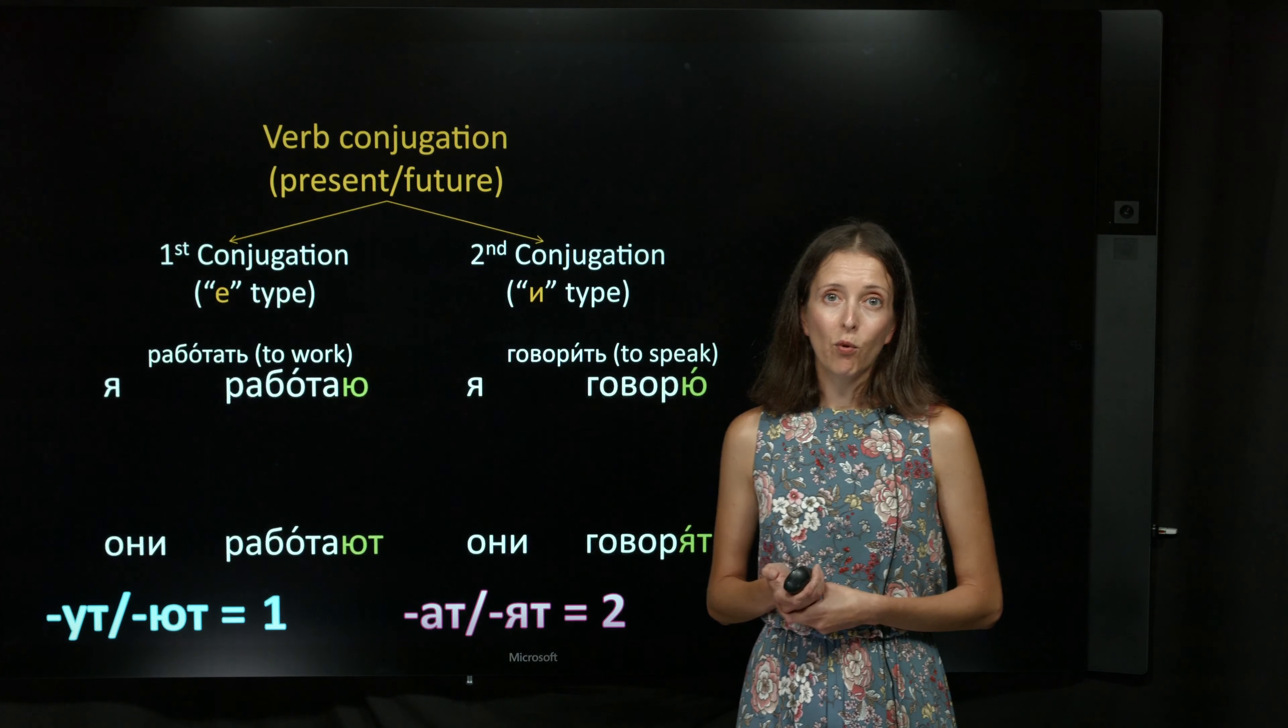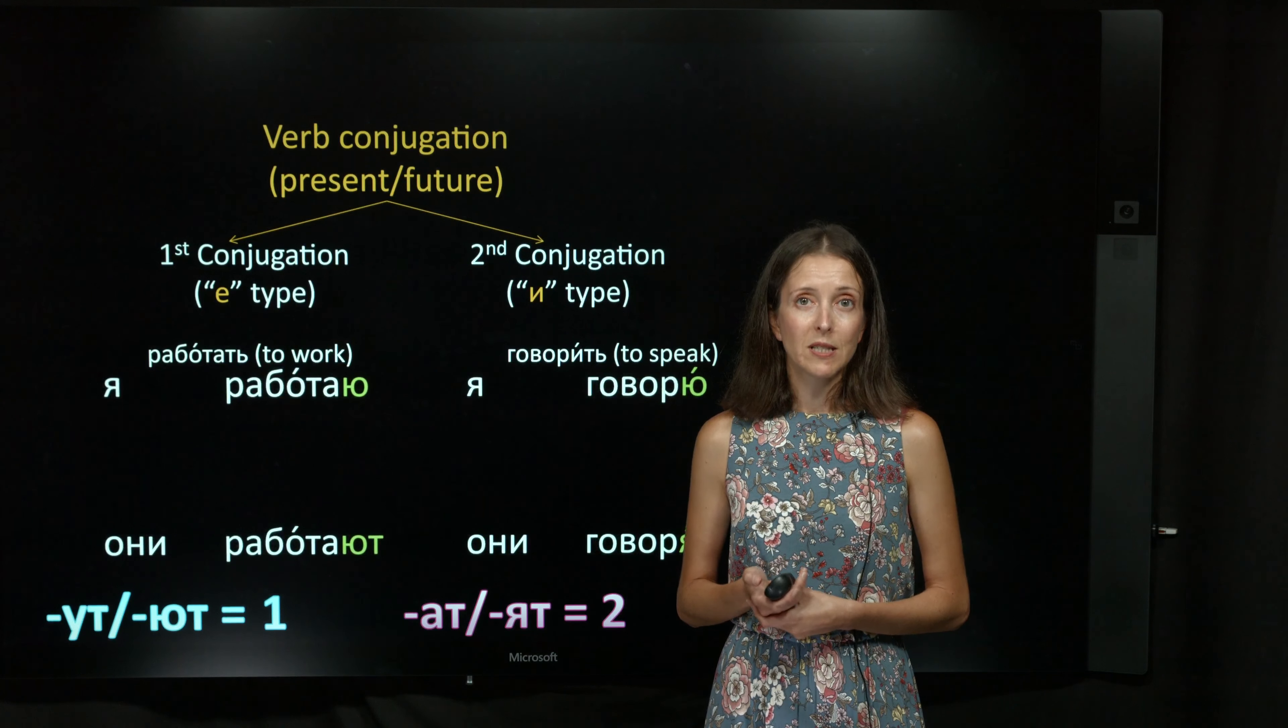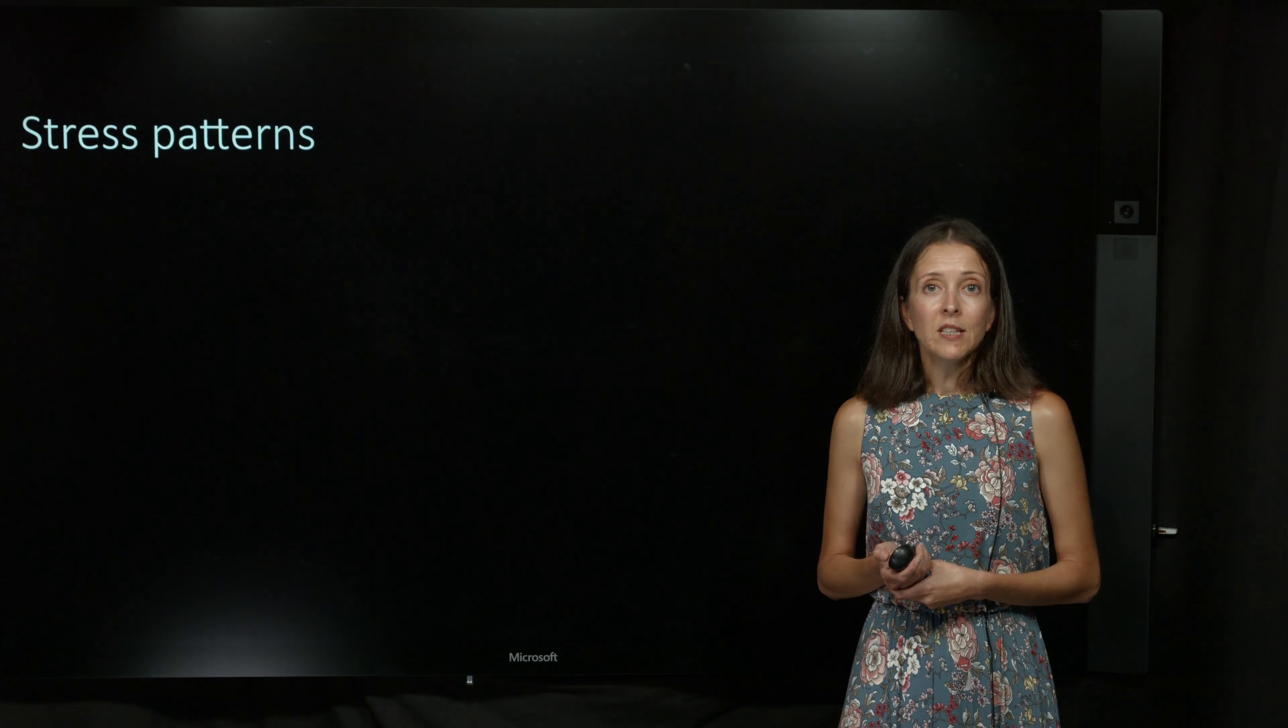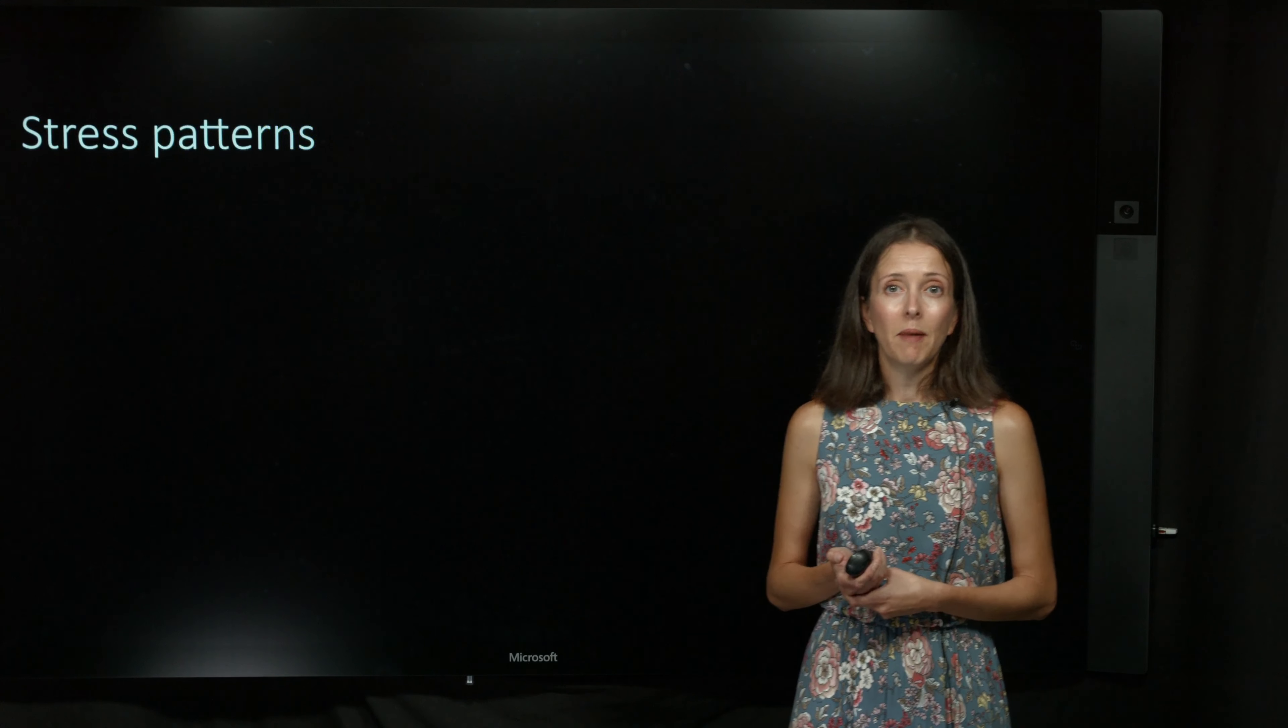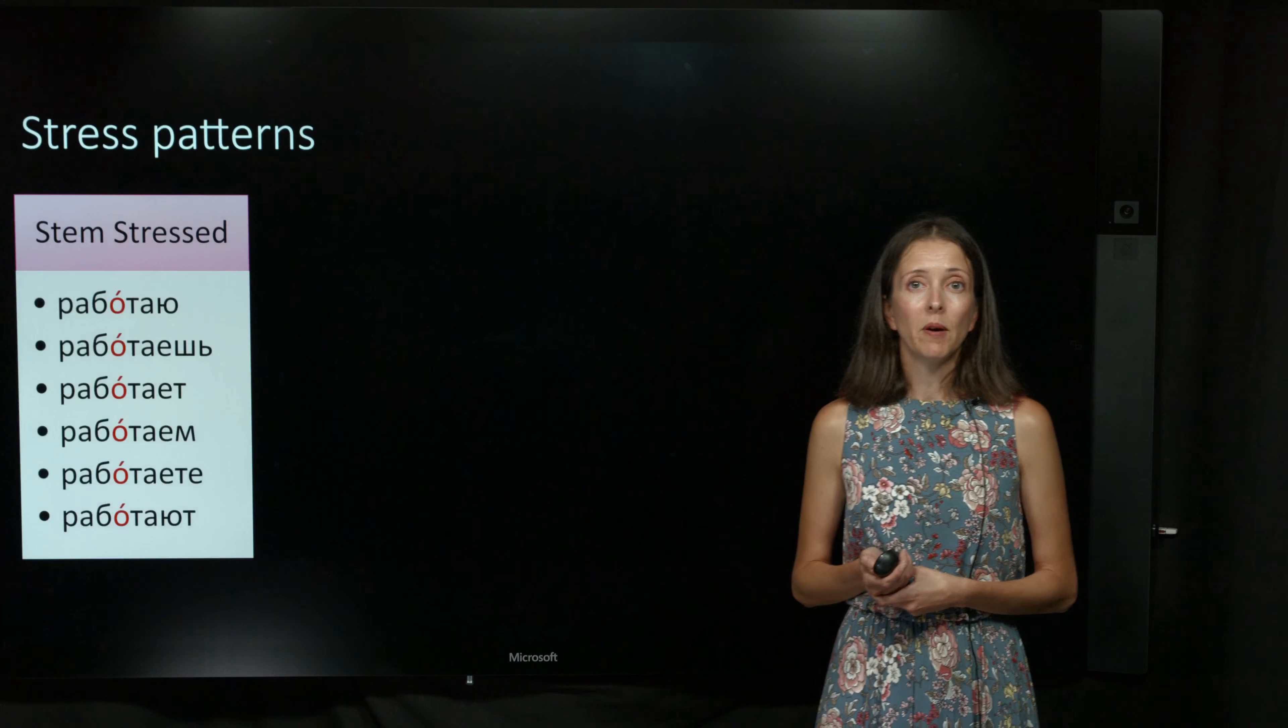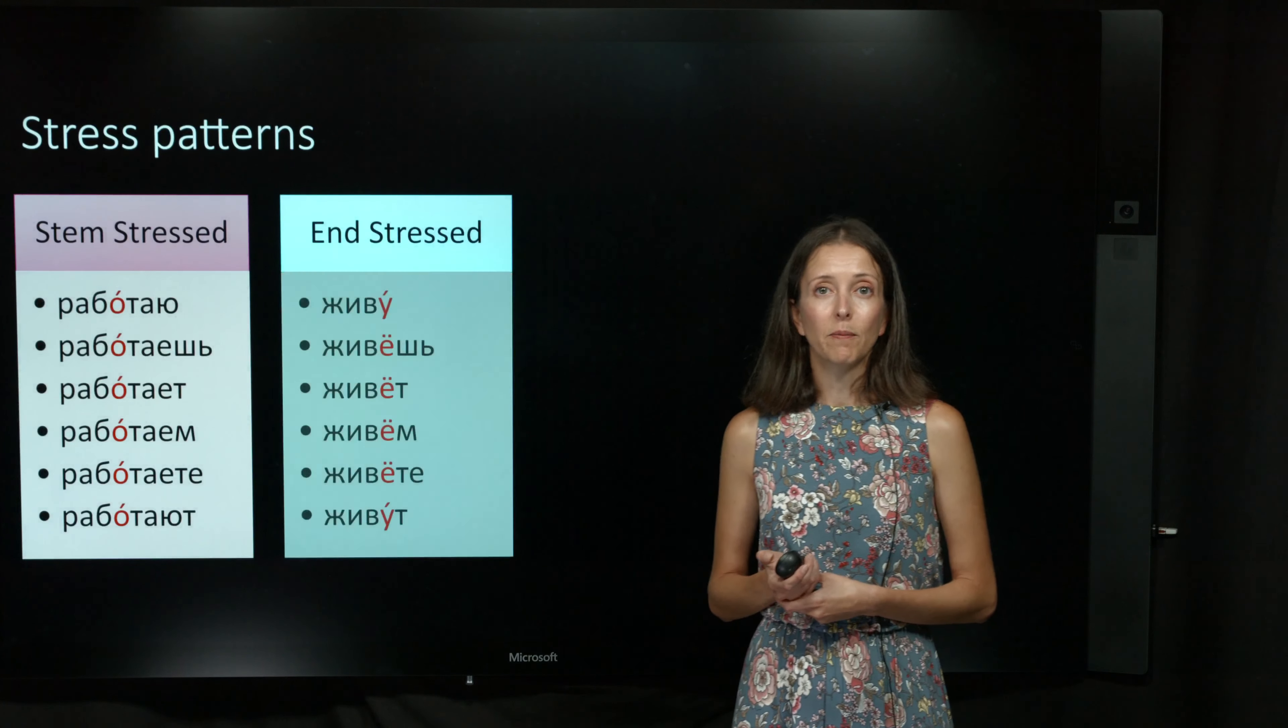Finally, the Я and Они forms combined will give you important information about the stress pattern of the verb. There are three stress patterns in the present-future forms. Verbs can be stem-stressed, like the verb работать. They can be end-stressed, like the verb жить.